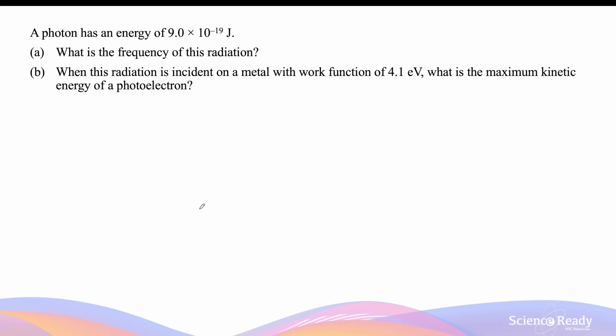In this video I'll be using common questions to help you better understand the quantum model of light and the photoelectric effect. Let's start with this question. A photon has an energy of 9.0 times 10 to the power of minus 19 joules. A photon refers to a discrete unit or packet of energy of light or any type of radiation in the quantum model of light.